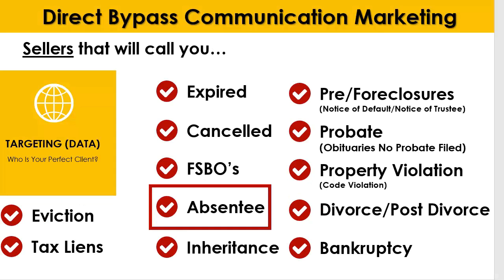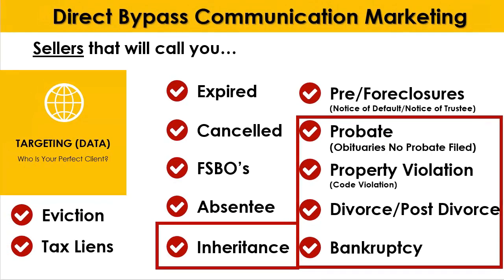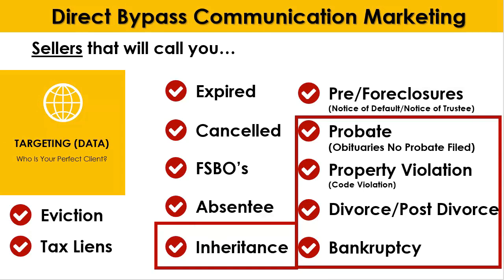Absentee data is probably the easiest to get access to — just go to a title company, or if you have MLS access, there should be something called Realists where you can pull up to 20,000 records a month. The harder data types include inheritance, probate to obituaries, divorce, post-divorce, bankruptcy, and property violations — these are more labor-intensive to pull. I used to have a virtual assistant pull these, and it becomes a managing nightmare. I discovered a particular source that has proven and tested data.